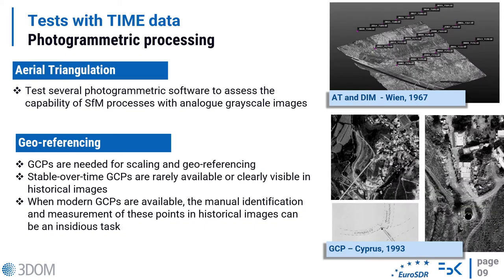About the automatic aerial triangulation, we tested the performance of different photogrammetric software to assess their capability of managing analog grayscale images. We then handled the georeferencing problem when stable over-time ground control points are not available or clearly visible in historical images. In this case, when modern ground control points are available, the corresponding points can be manually identified and measured in historical images, but we verified that relevant errors can be introduced in this processing phase.